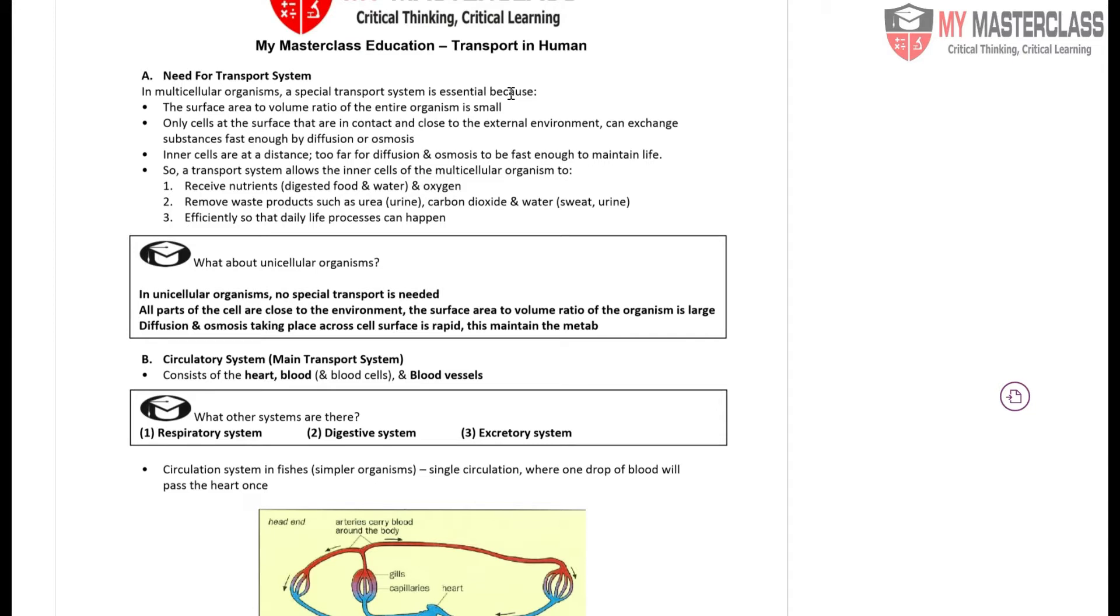It's a bigger topic which is why we'll be splitting it up into two components. Now, why do we need a transport system? We have two types of organisms: multicellular organisms, which most of us are, and unicellular organisms.